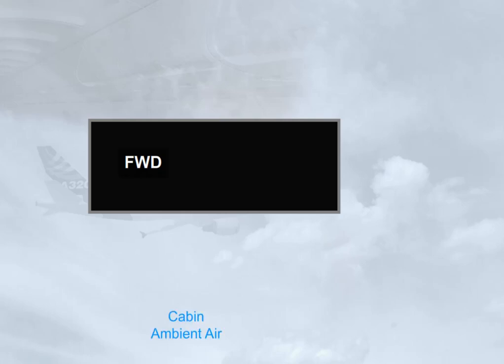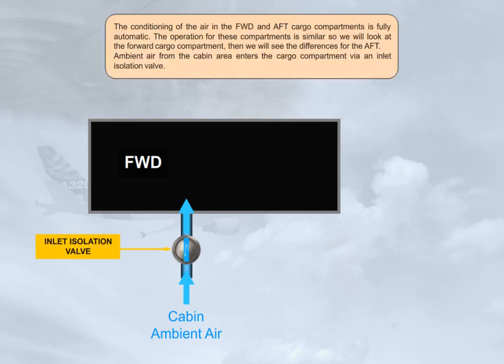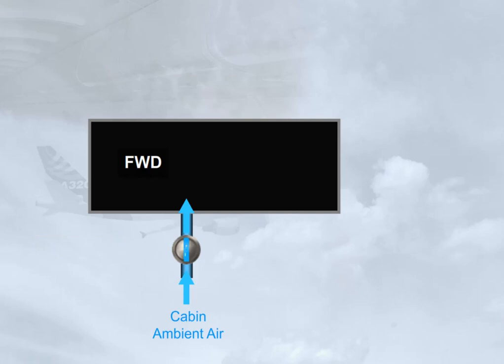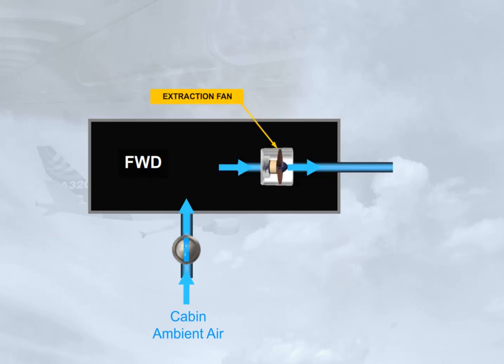Ambient air from the cabin area enters the cargo compartment via an inlet isolation valve. The air is removed from the compartment either by an extraction fan when running, or by differential pressure when in flight. Then the air is discharged overboard via an outlet isolation valve.